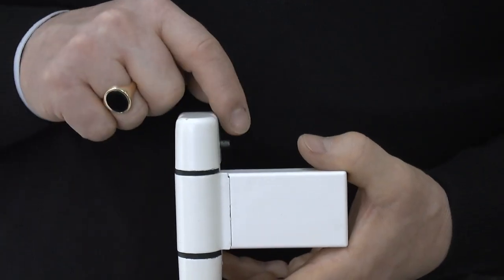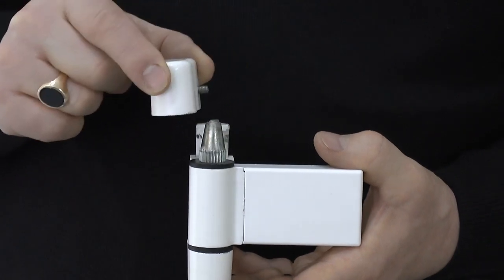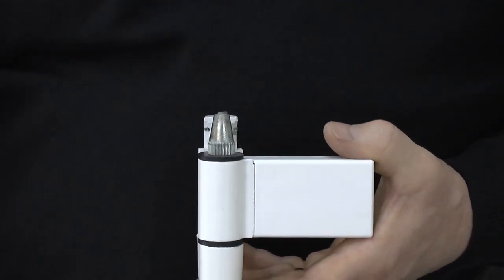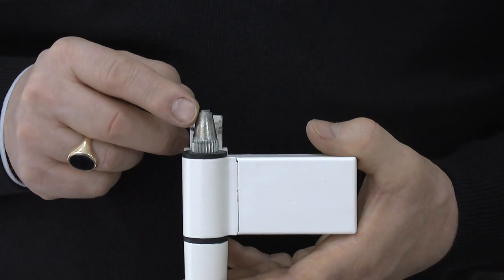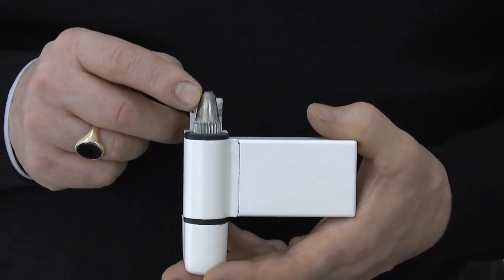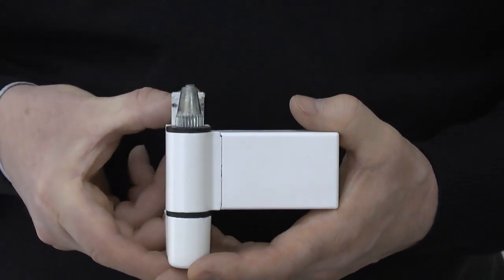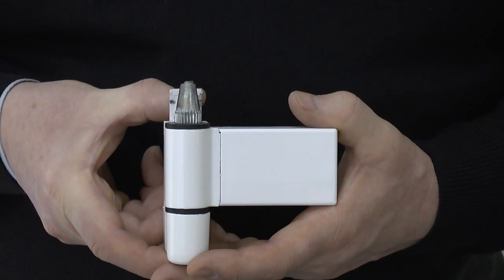Once you've unscrewed the allen screw at the side and lifted off the cover plate, you'll do that to both the top, bottom, and middle hinge. Now clearly you're going to need a lift here because you'll be wanting to lift the whole door off its hinges.